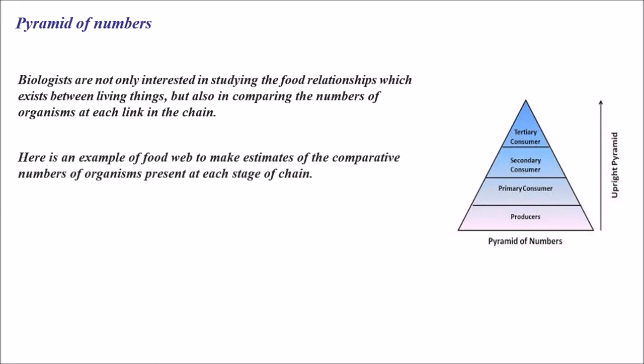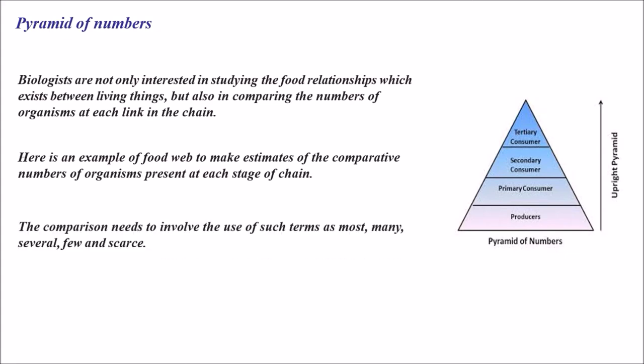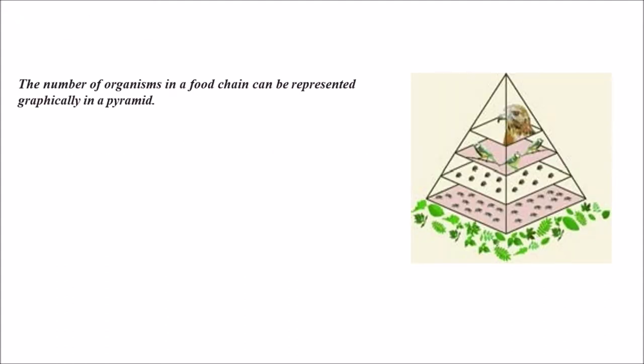Here is an example of a food web to make estimates of the comparative number of organisms present at each stage of the chain. The comparison needs to involve the use of terms such as most, many, several, few, and scarce. These are the terms we use in order to compare organisms at different levels.